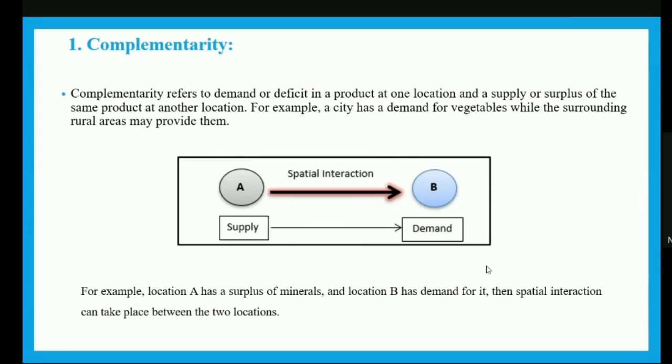Complementarity refers to demand or deficit in a product at one location and the supply or surplus of the same product at another location. For example, a city has a demand for vegetables while the surrounding rural areas may provide them. If location A has a surplus of minerals and location B has a demand for it, spatial interaction between these two locations will take place because there is complementarity — A wants to supply its surplus minerals to meet B's demand.